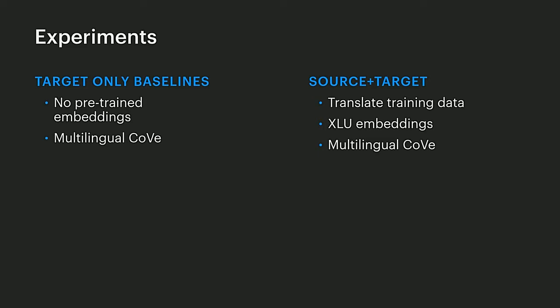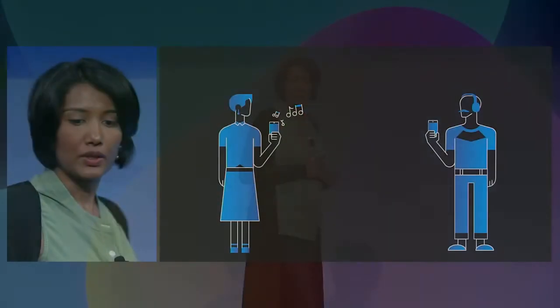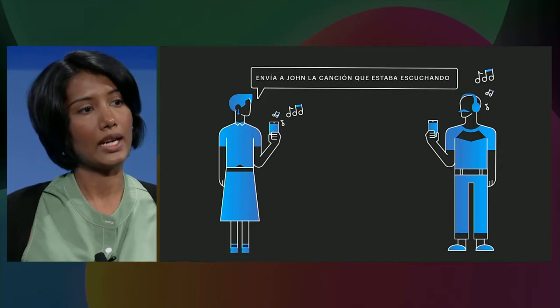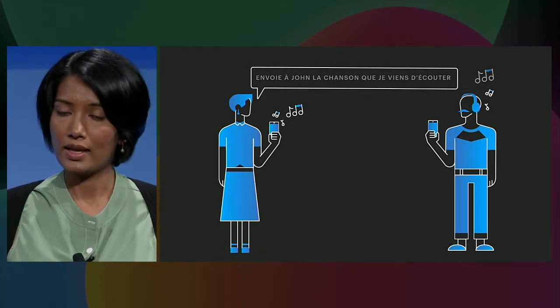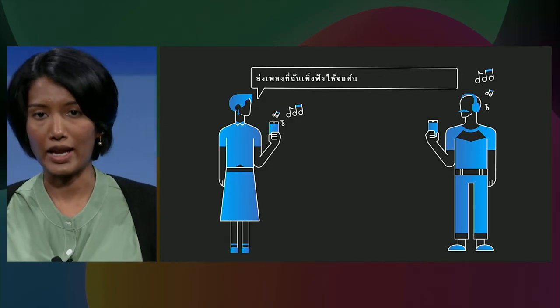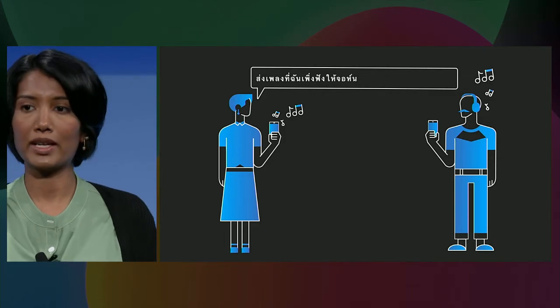In our experiments, we compare two setups: one where we take just the target training data, and another where we combine target training data with English training data. Our work, shown in the green bar, gives quite good results for Spanish and for Thai in both settings. So in short, I described our research efforts in conversational AI that can help users complete tasks — now we can have technology that can send your friend John a song you're listening to, in multiple different languages. Thank you. Next I would like to invite my colleague Angela to the stage.